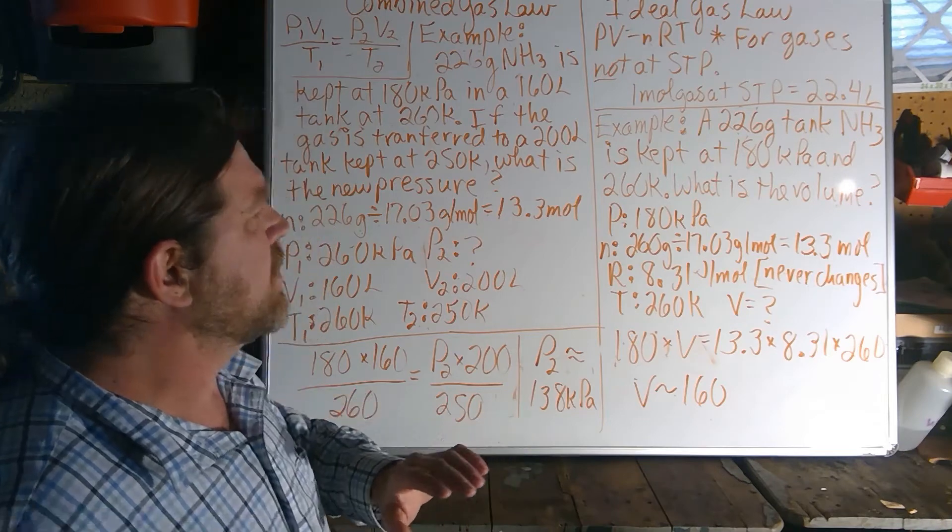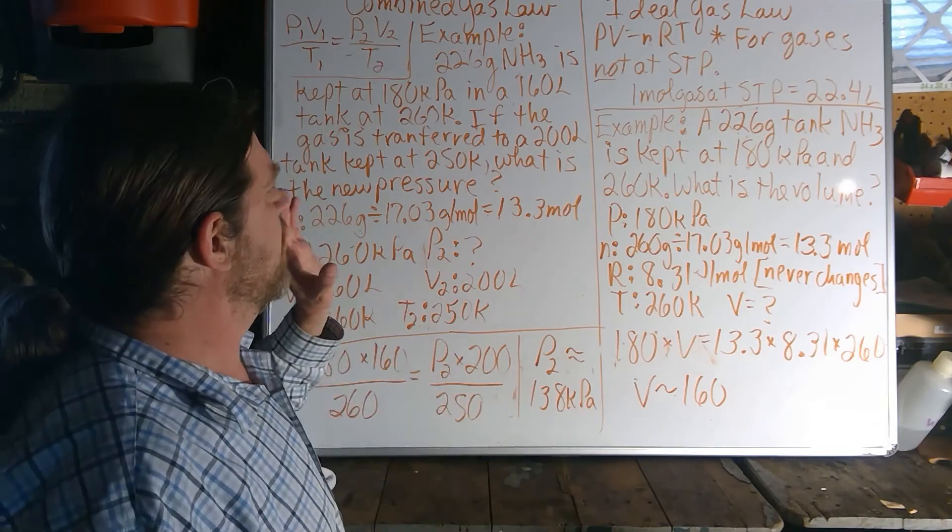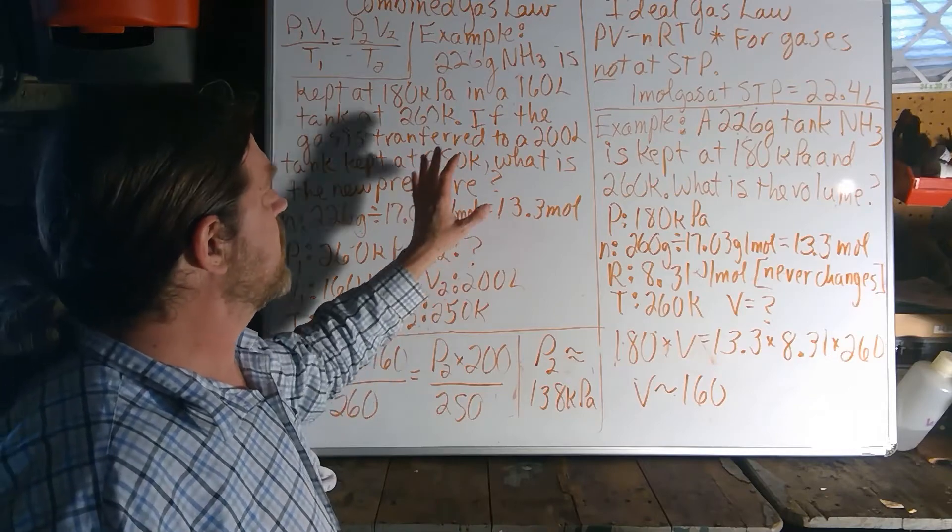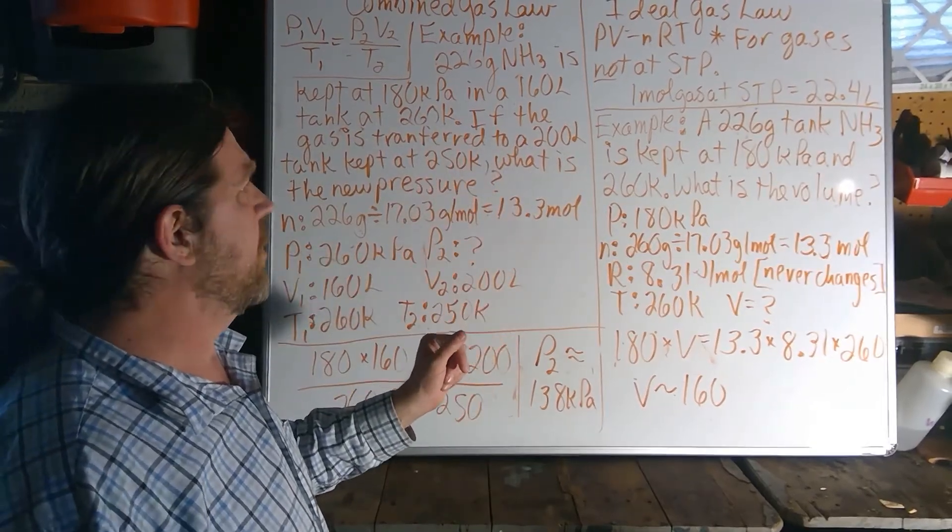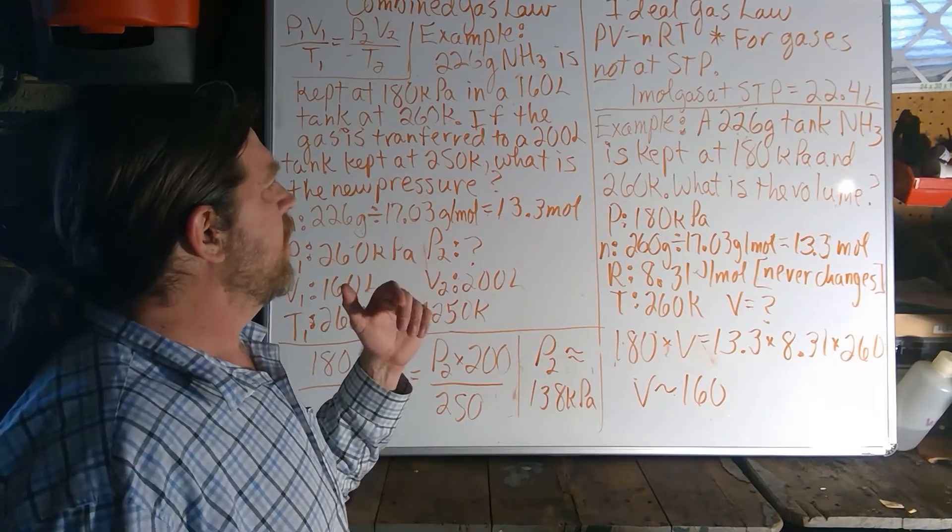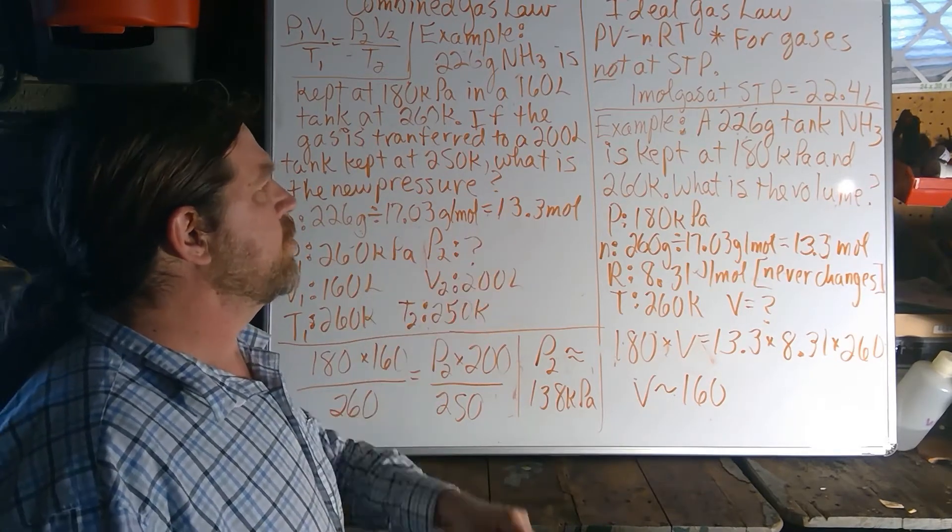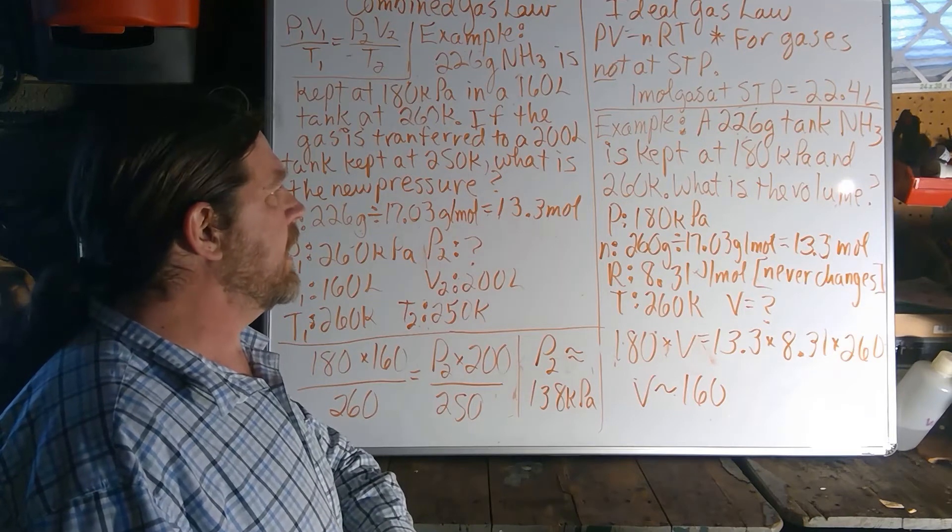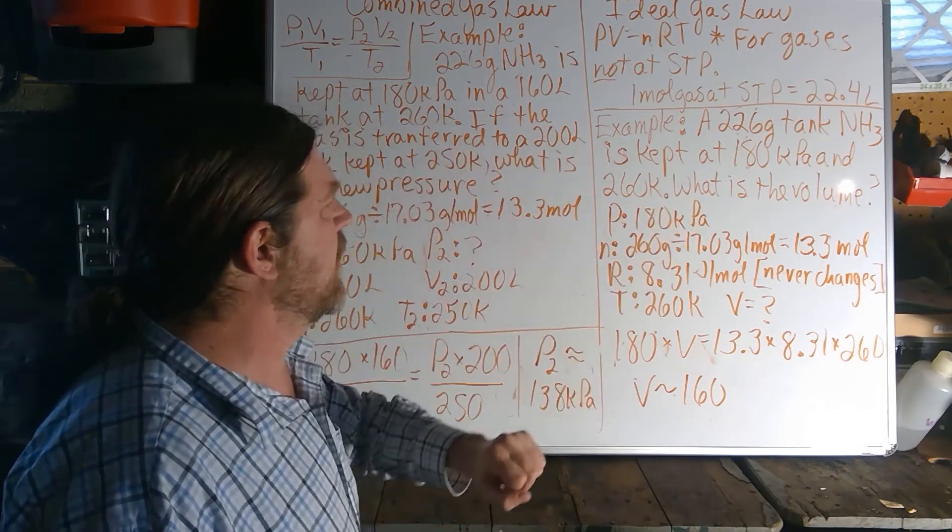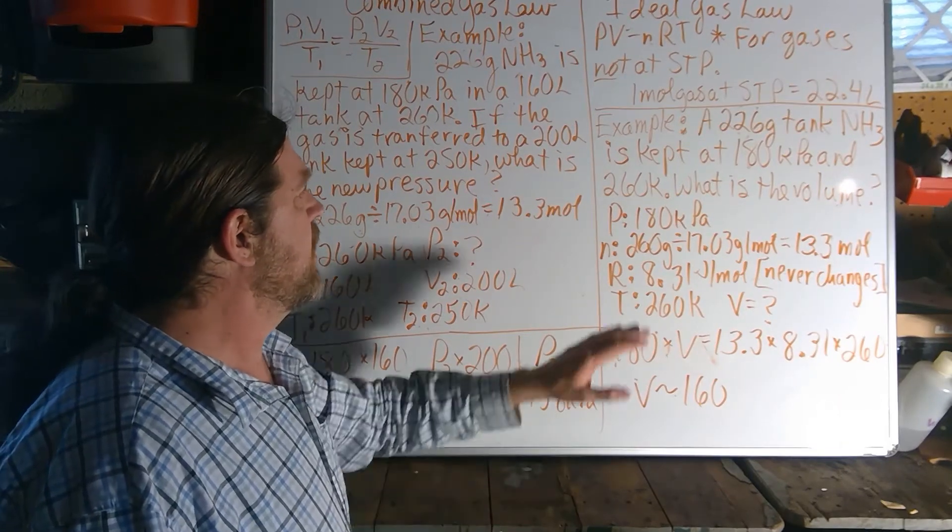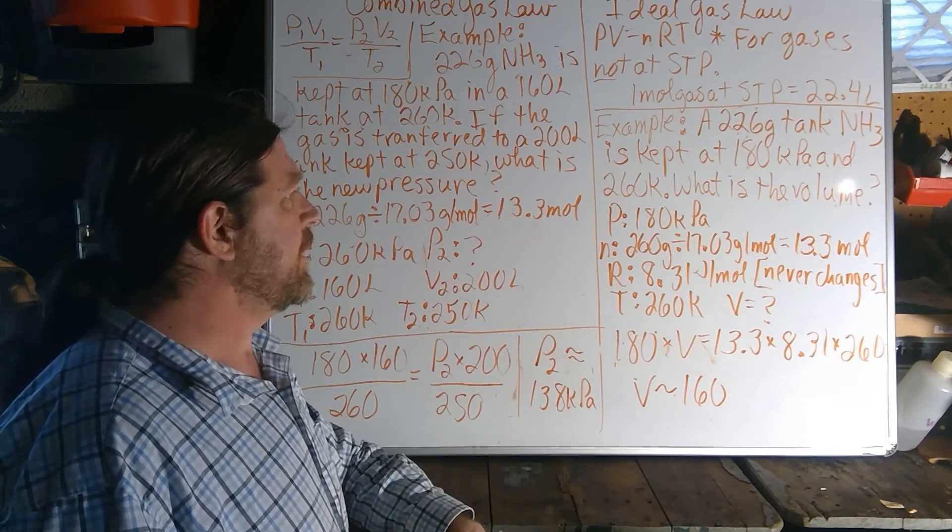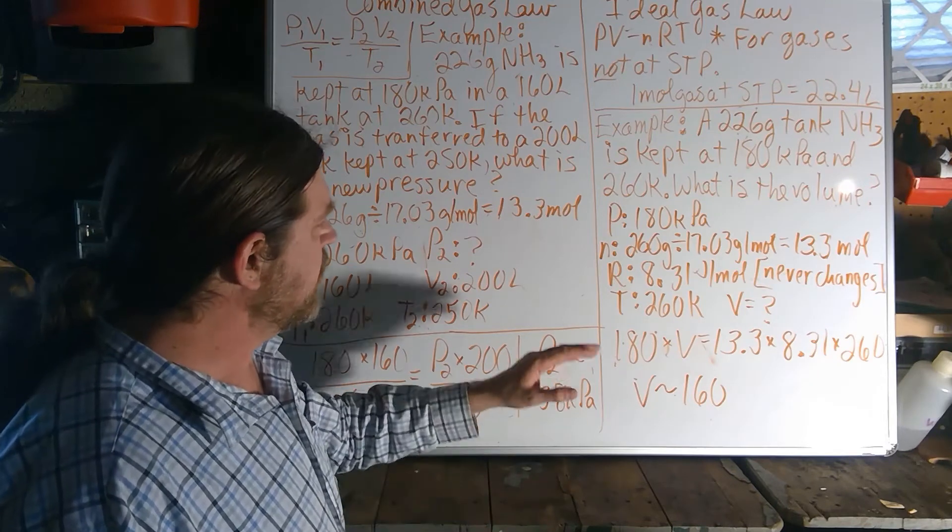So let's take a situation with a similar gas that's being analyzed, and notice how we look at it differently depending on the law involved. Let's start off with the ideal gas law. So in our example here, we have a 226-gram tank of ammonia, and it's kept at 180 degrees kilopascals of pressure and 260 Kelvin of temperature. What would the volume be in this case?